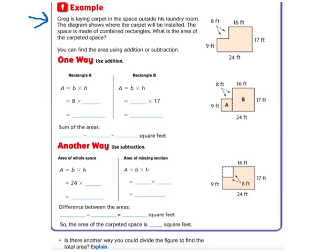It says, Greg is laying carpet in the space outside his laundry room. The diagram shows where the carpet will be installed. So everything that's orange over here is going to be carpet. The space is made out of combined rectangles or more than one rectangle. What is the area of the carpeted space? You can find this either doing addition or subtraction. So first step, split these up into rectangles, two different rectangles.